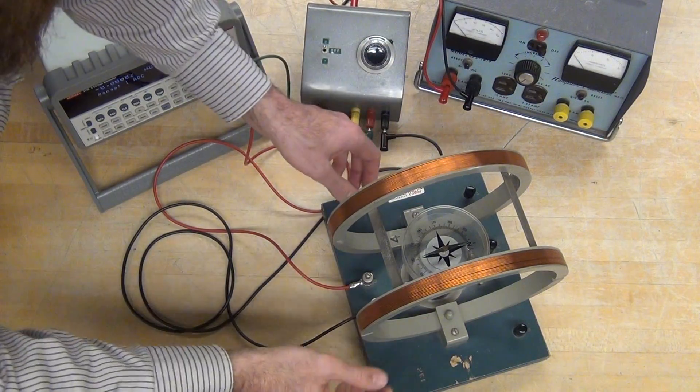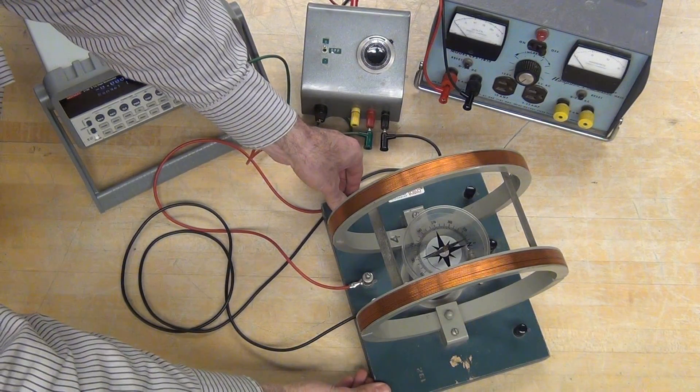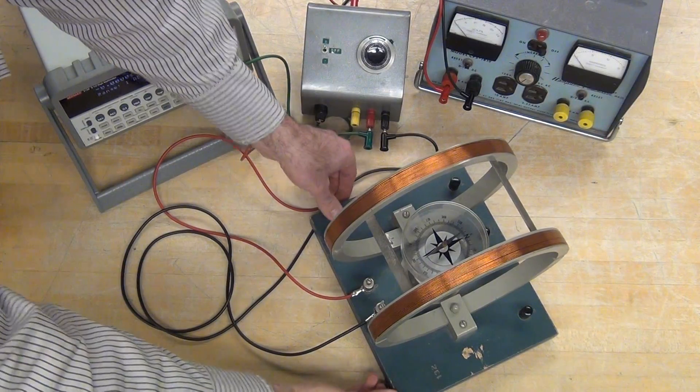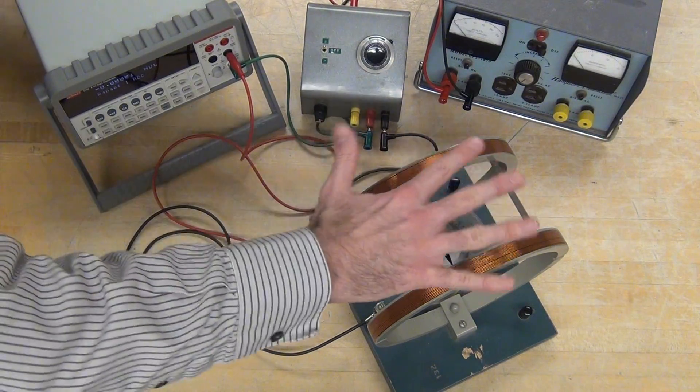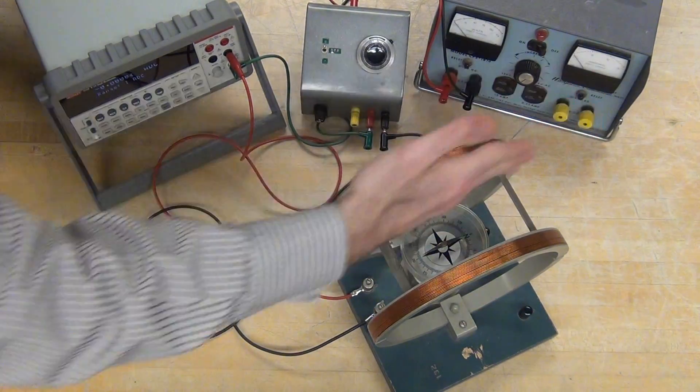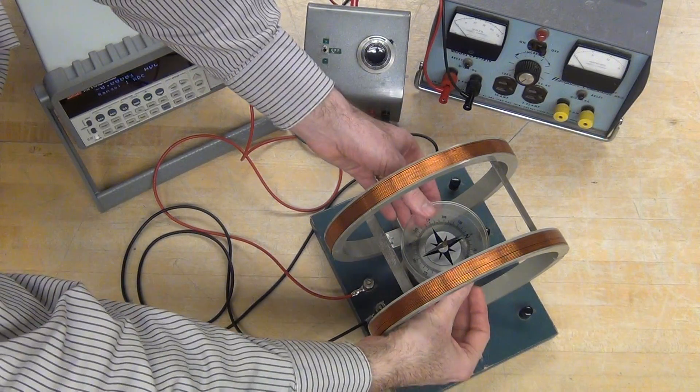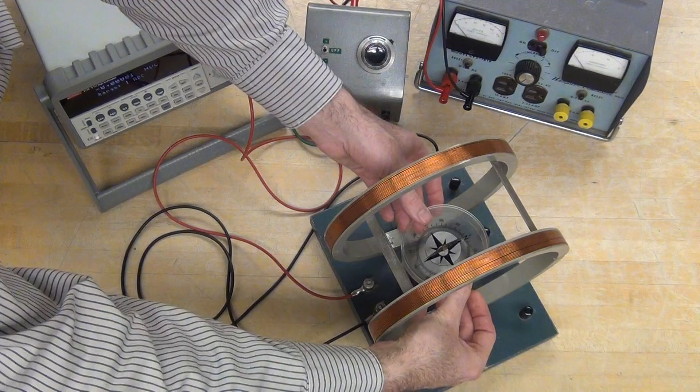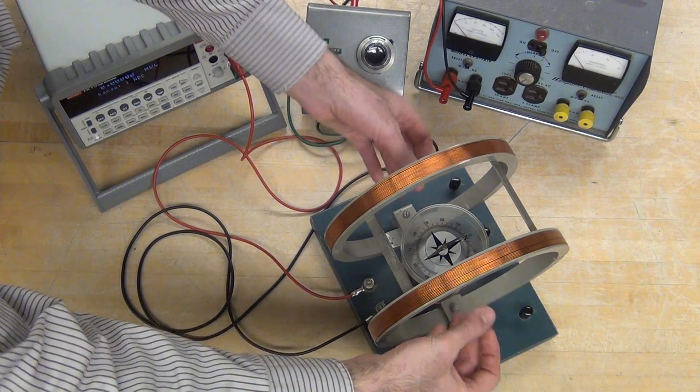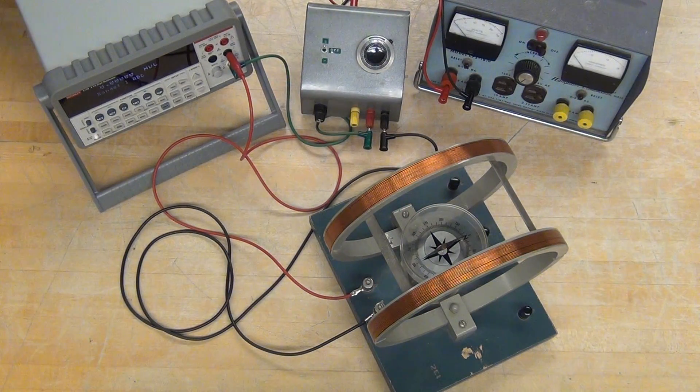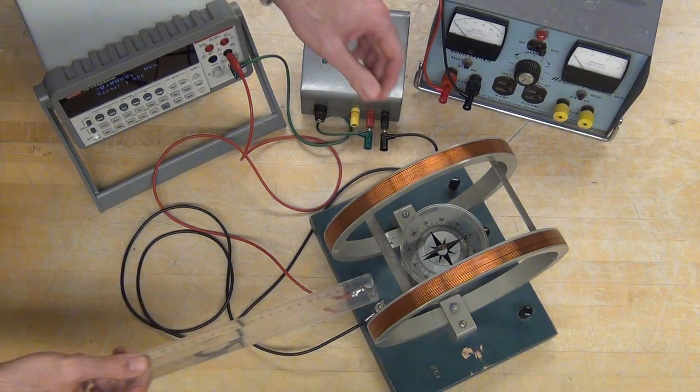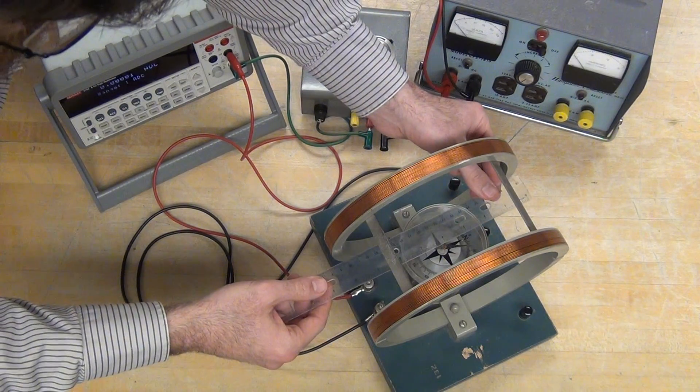That means we need the plane, the face of our coil, to be lined up with north. So once you've got your compass in there, you might have to adjust, turn it so that the plane is exactly in line with north. And then you can rotate this base underneath the needle so that the needle starts at zero.